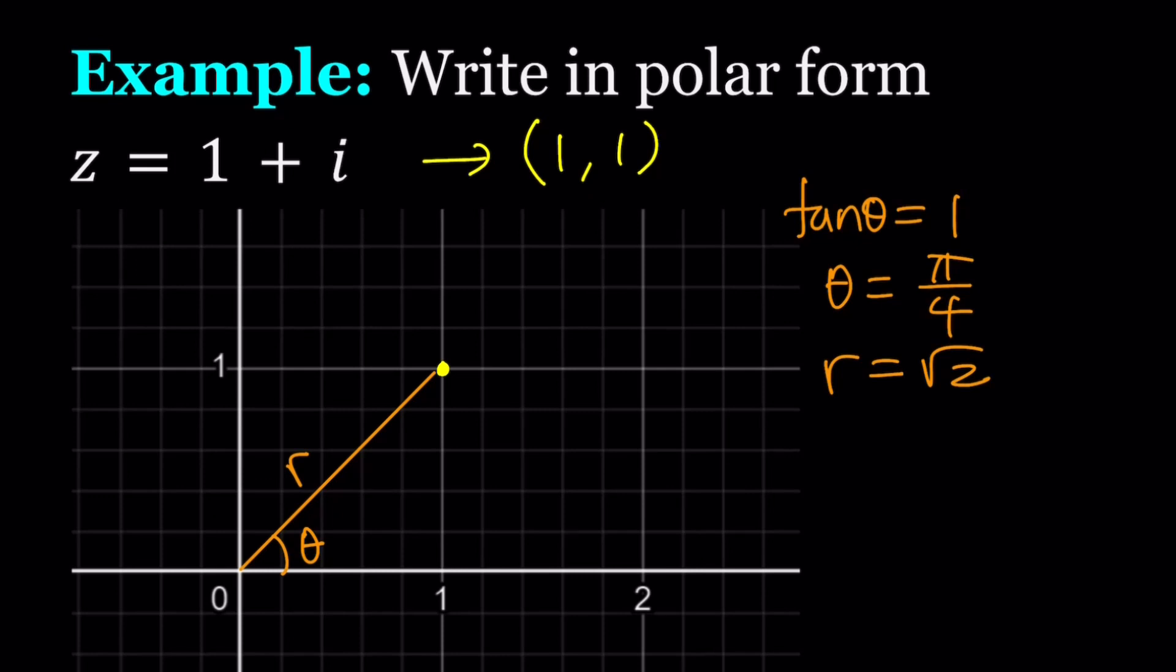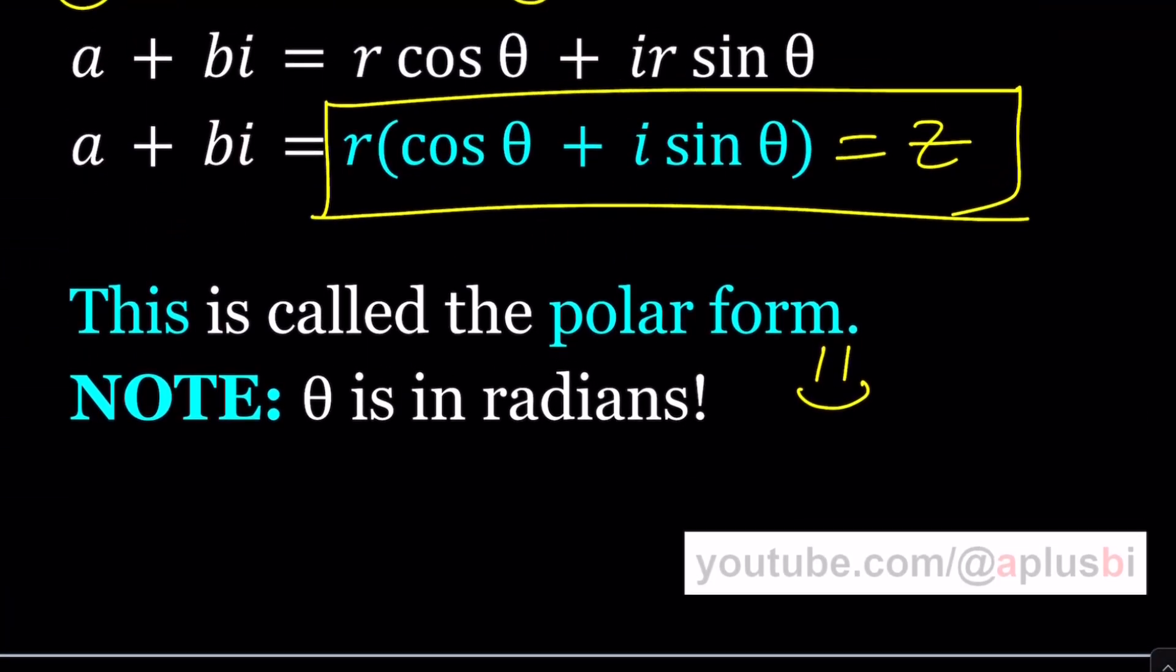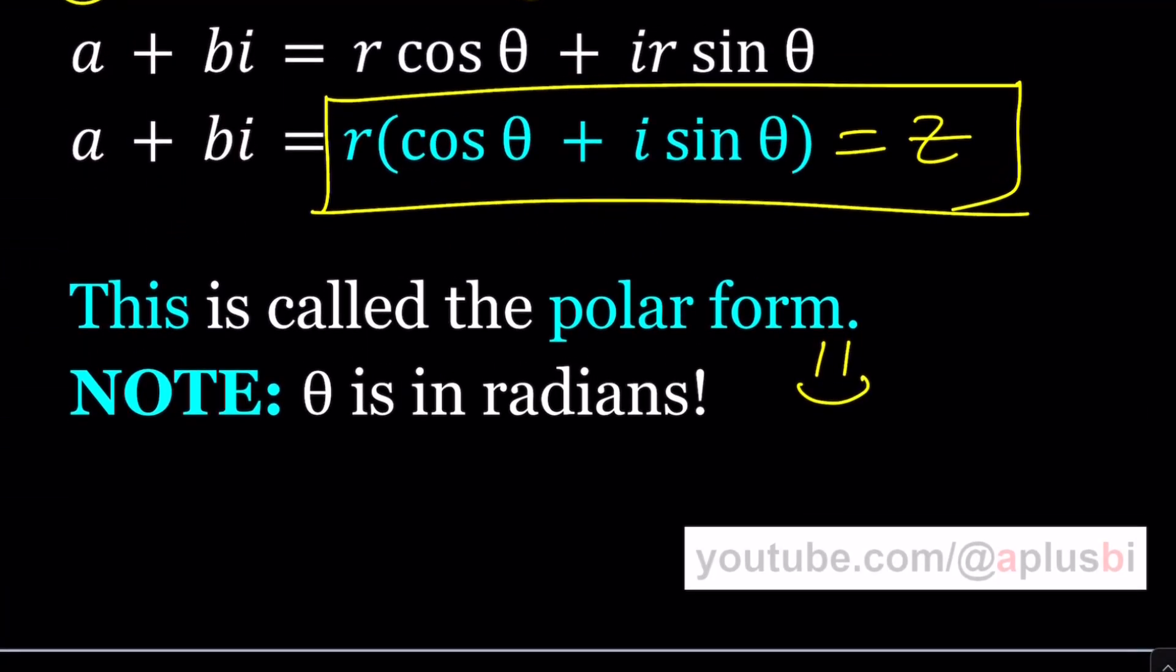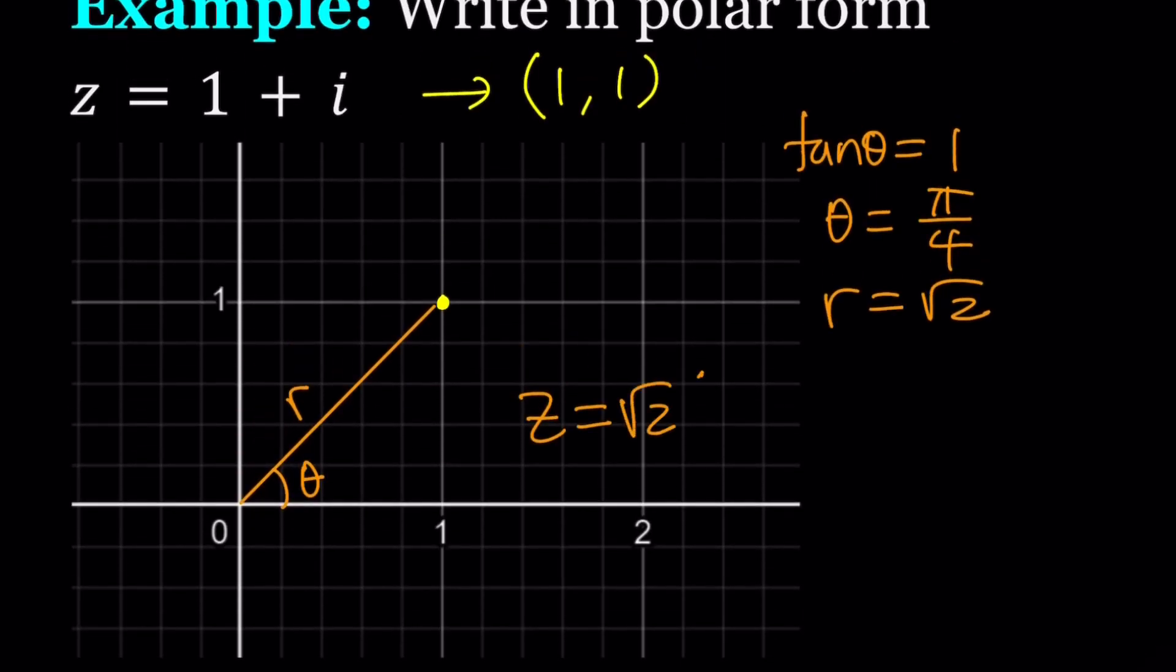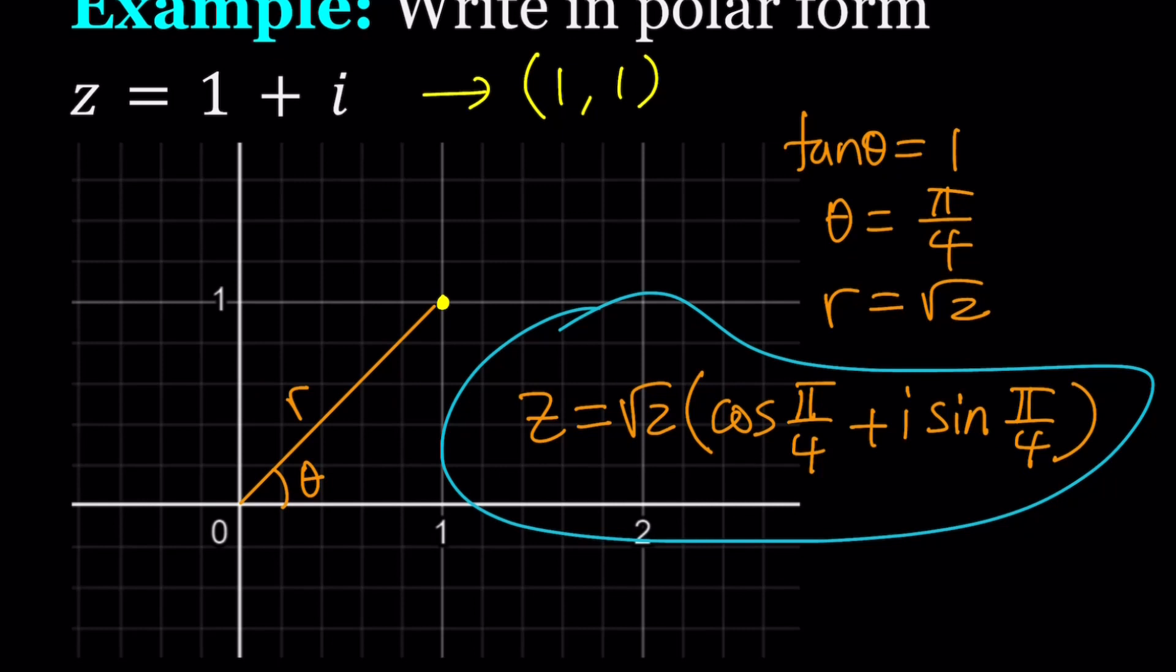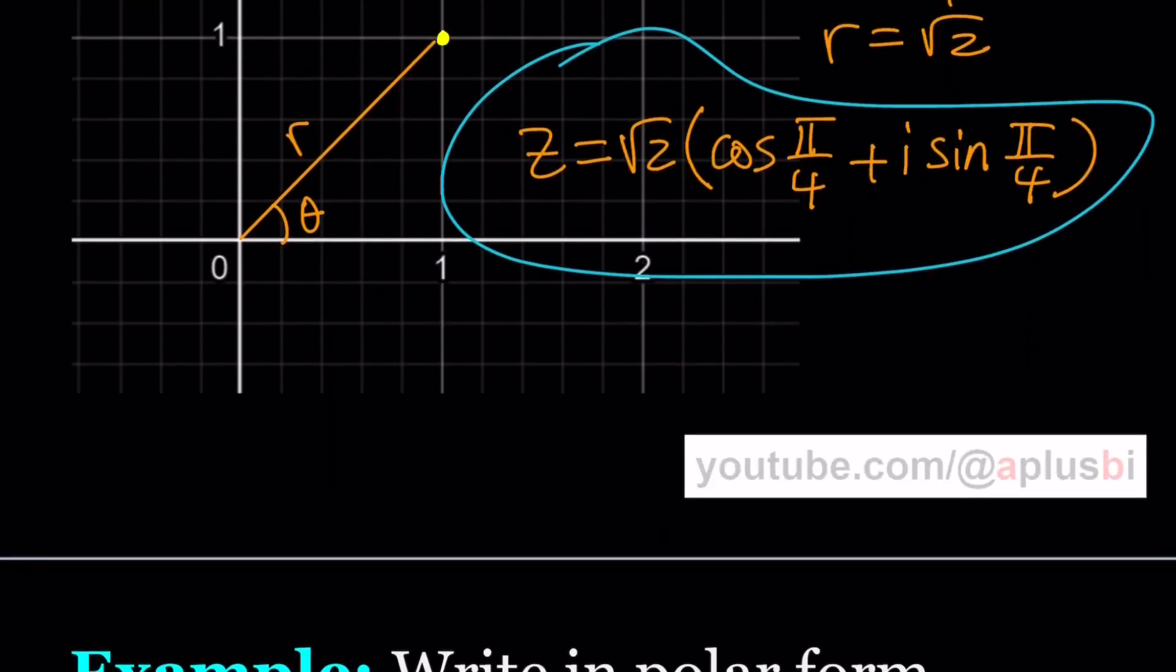So under those conditions, we can go ahead and write this. And remember, the form was R times the quantity cosine theta plus I sine theta. So R is going to be on the outside, and then we're going to write cosine theta, which is pi over 4, and then I times sine theta. So this is our number in polar form.